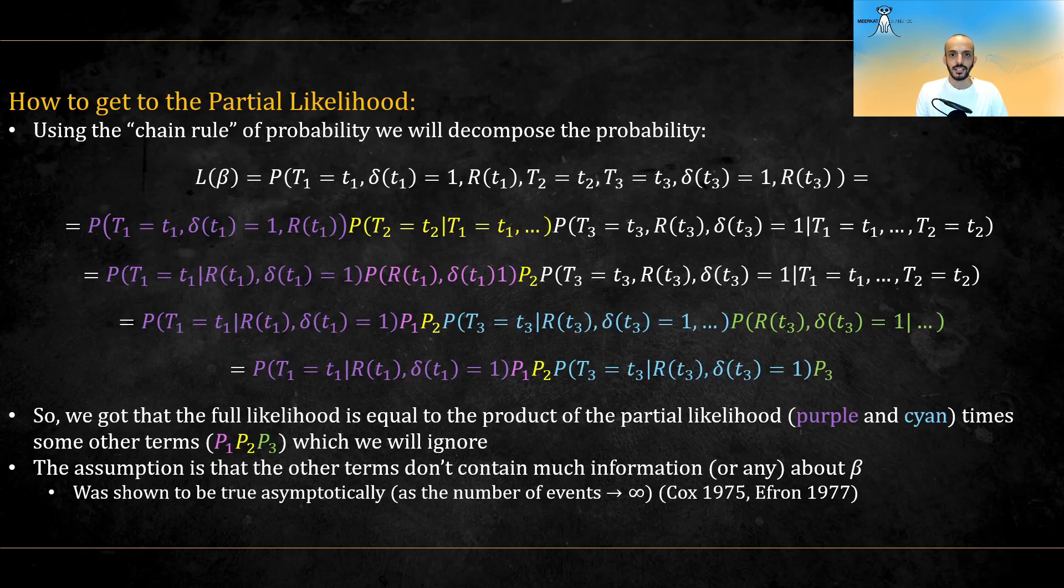The assumption is that the other terms don't contain much information or any about beta. This was shown to be true asymptotically, as the number of events go to infinity. Note that the pink p1 could actually have canceled some terms in the individual partial likelihood term in purple, but this is not true for any subsequent partial likelihood terms.